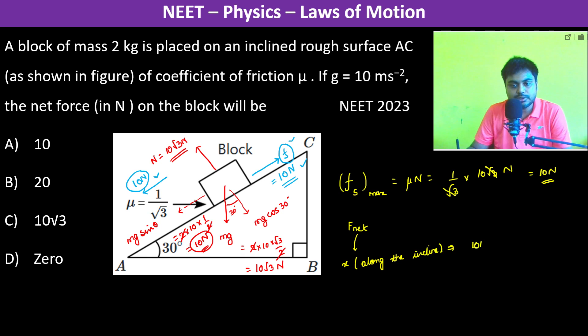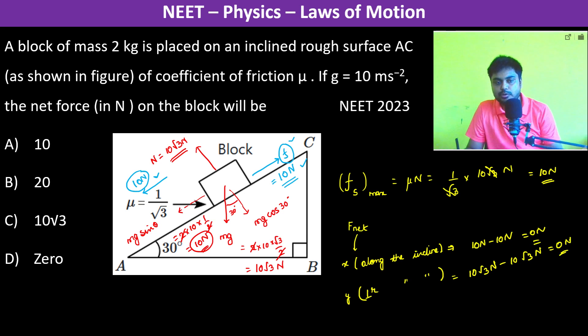And along y also, which is perpendicular to the incline, this is again 10 root 3 Newton minus 10 root 3 Newton which is again 0 Newton. So it's perfectly balanced system, it's an equilibrium and thus the net force on the block is going to be 0.